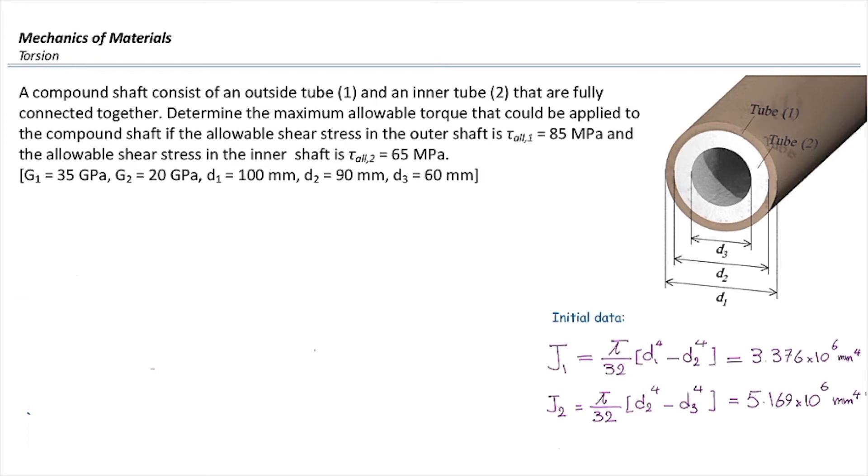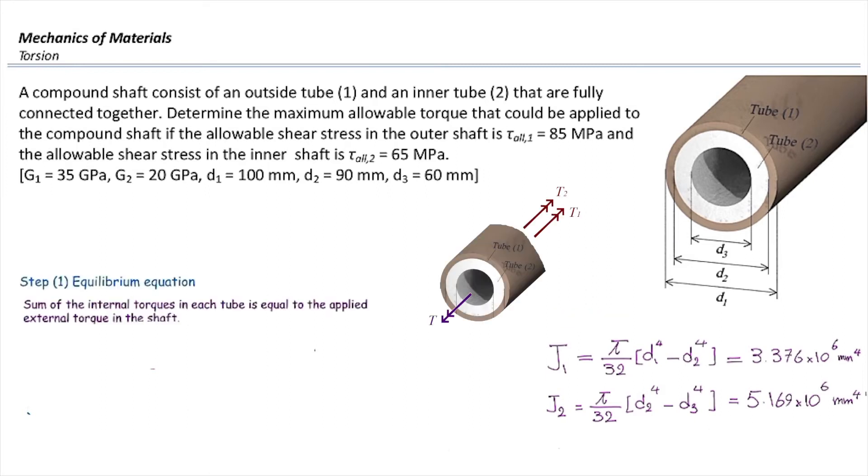Now let's start with the free body diagram. We are going to cut, and there will be two torques outward from the surface. That would give us T1 plus T2 equals the external torque acting on the system. We don't know how much is that external torque, so I'm just going to leave it as T. Here we have three unknowns in this problem. I'm going to call that equation number one.